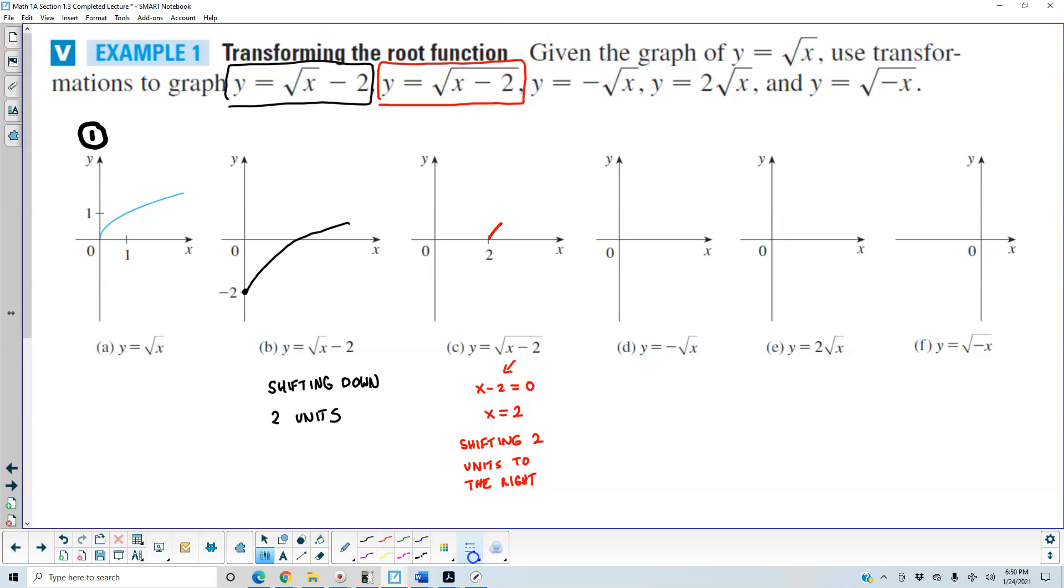So that means we have our graph now shifting two units to the right. The next function is y is equal to negative times the square root of x. So that means it's now going to be shifted here. Therefore, it's reflecting about the x-axis.